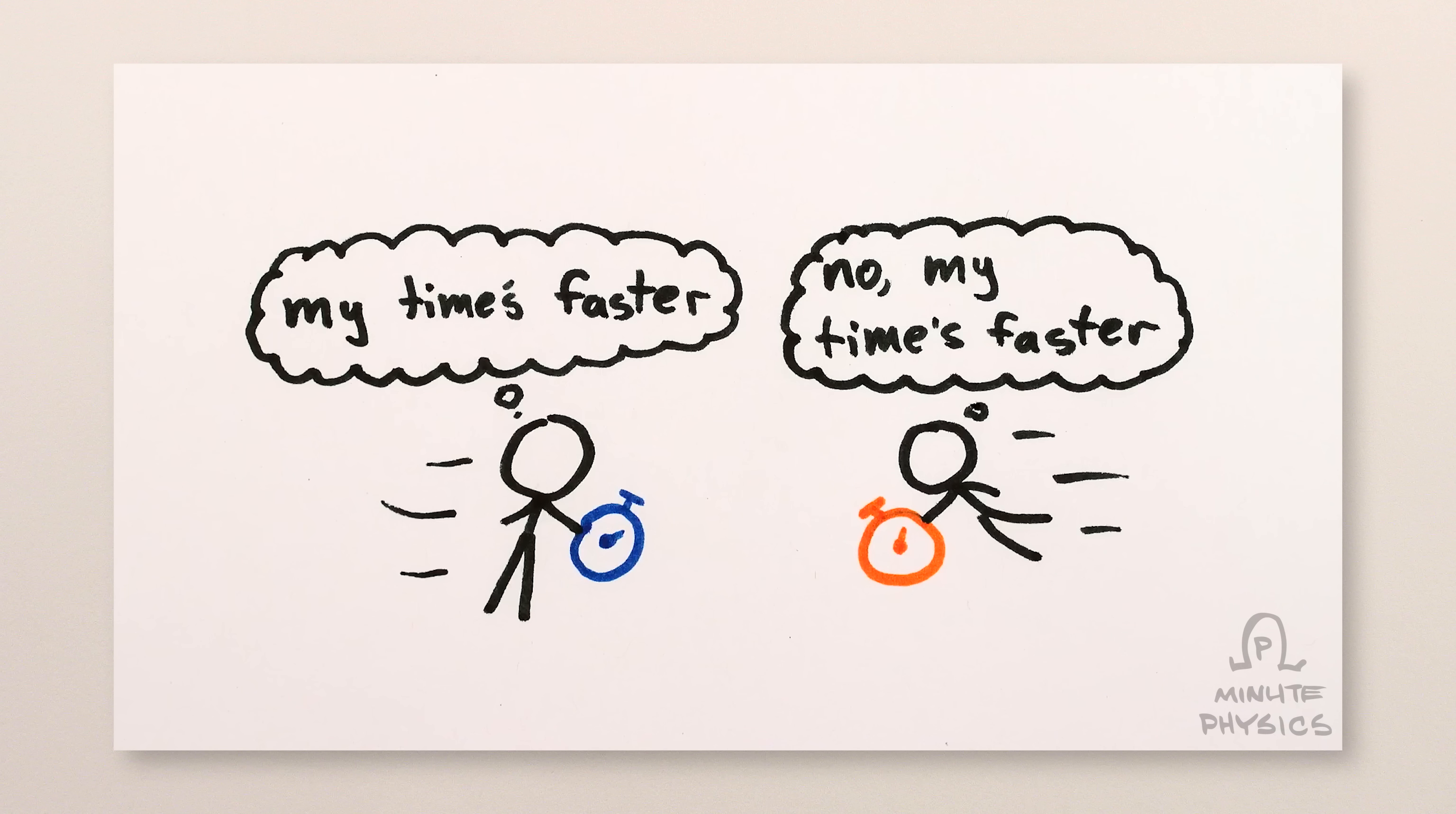Length contraction, on the other hand, is a tad more complicated. First, we need something with length. Let's suppose we have a cat whose tail is at position zero for all time, and whose head is 600 million meters to the right for all time. Remember, each horizontal tick mark here represents 299,792,458 meters. So from my perspective, the cat is 600 million meters long.